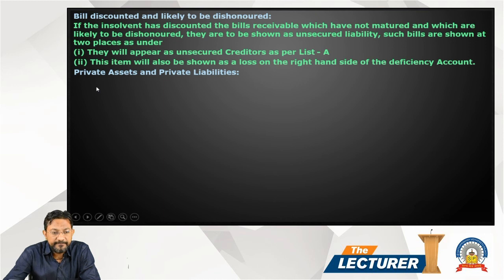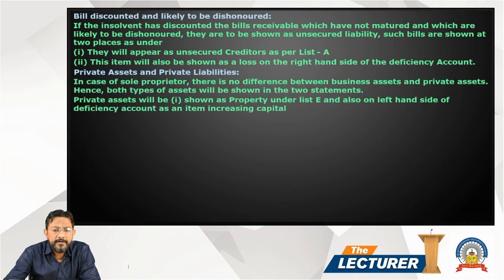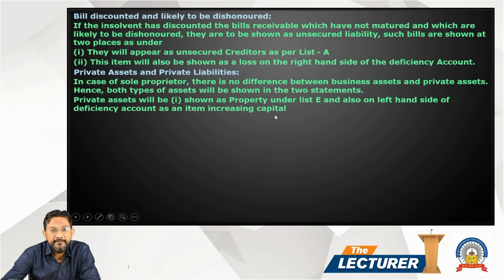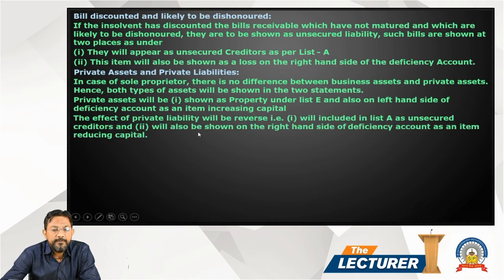Private Assets and Private Liabilities: In the case of a sole proprietor, there is no difference between business assets and private assets, and both types of assets will be shown in two statements. Private assets will be shown as property under List E, and also on the left-hand side of the deficiency account as an item increasing capital. Similarly, the effect of private liabilities will be reversed — private liabilities will be included in the list as unsecured creditors and also shown on the right-hand side of the deficiency account as an item reducing capital.